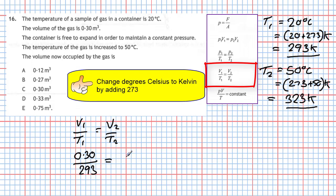That equals the second volume which we are after, divided by 323 Kelvin, the second temperature. Now all we have to do is cross multiply. So if we cross multiply we get 293 times V2 and that's going to equal 323 times 0.30.